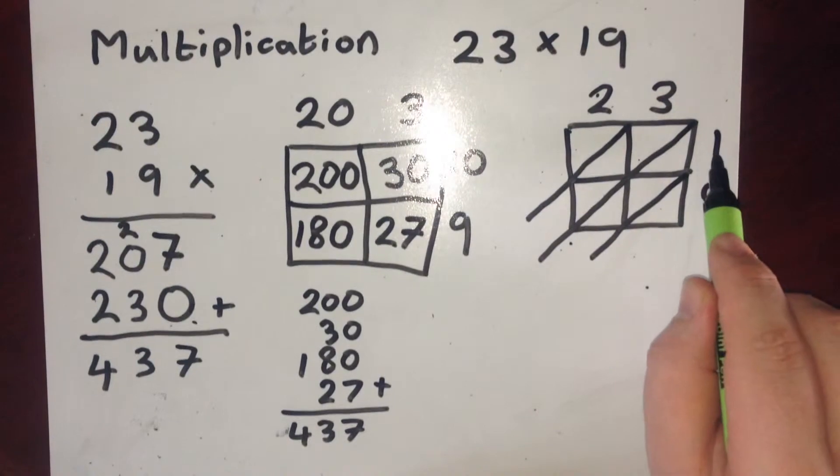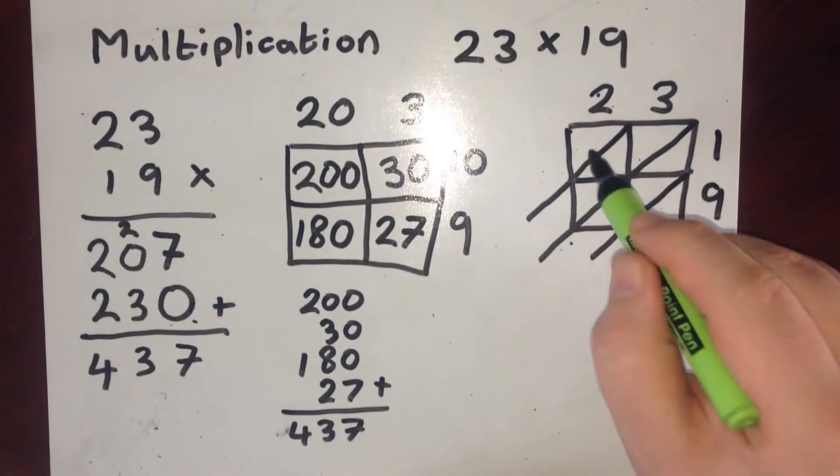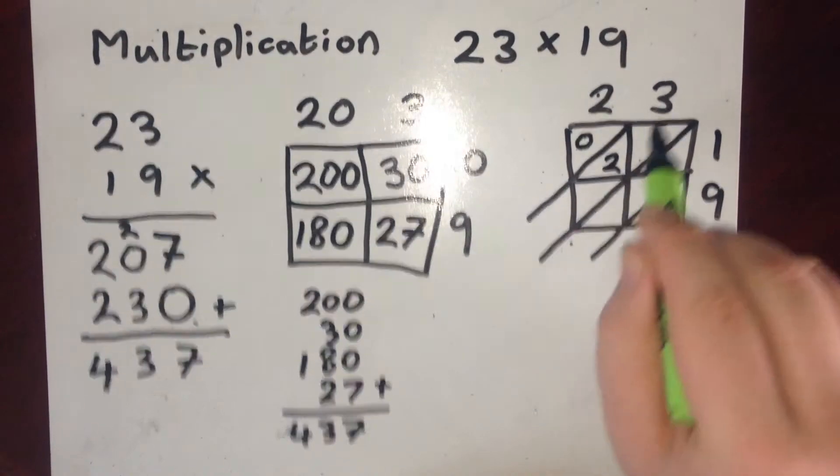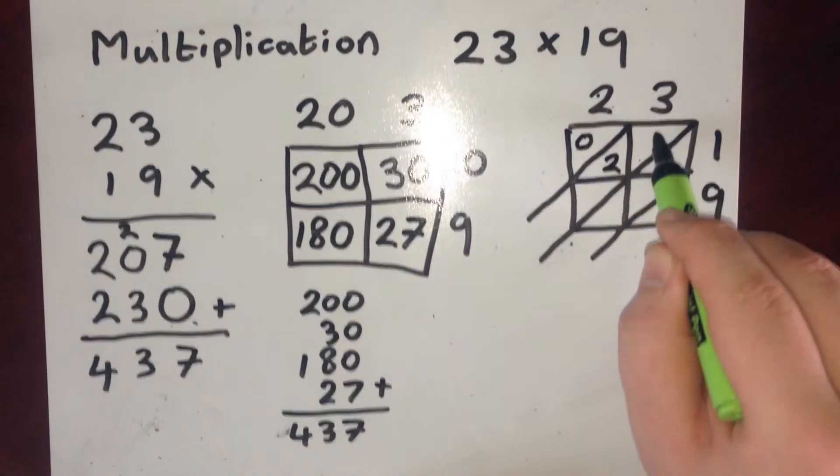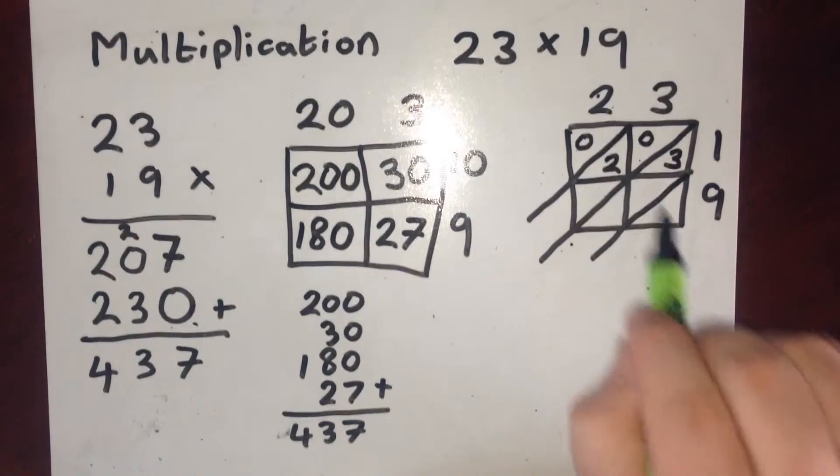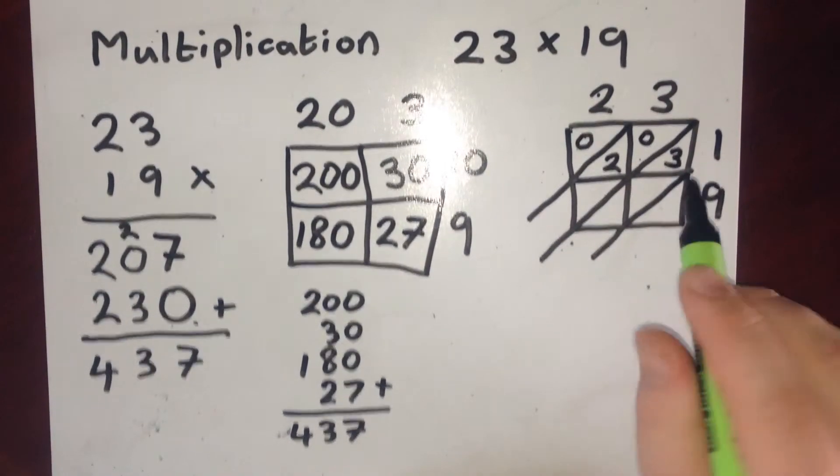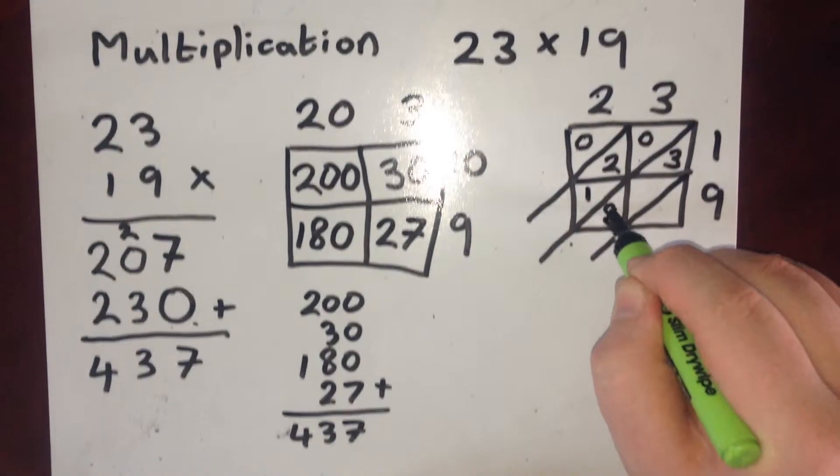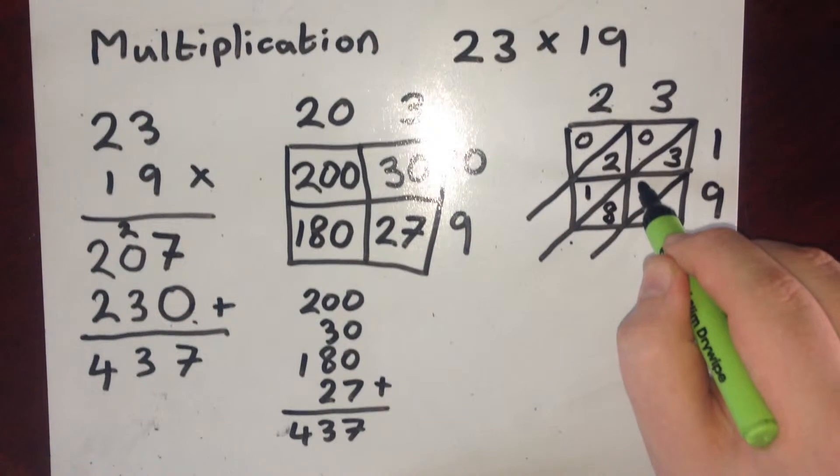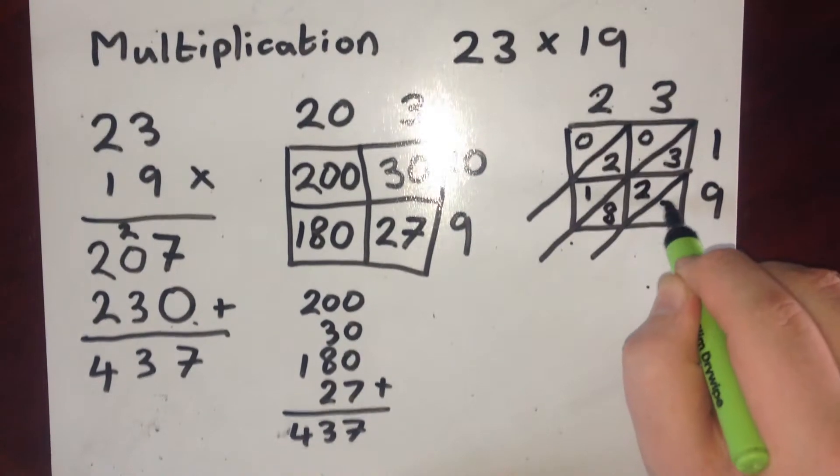So when I do 2 times by 1, that's 2. So there's no tens in 2, and there's 2 units. 3 times by 1 is 3. So that's no tens, 3 units. 2 times by 9 is 18. So that's 1 ten and 8 units. 3 times by 9 is 27. That's no tens in 3.